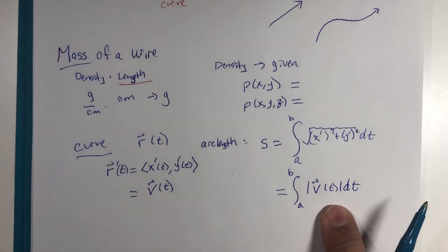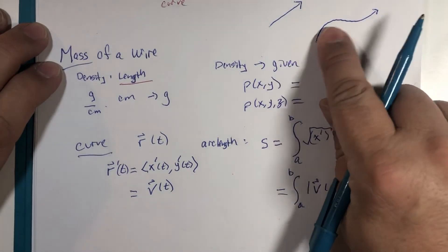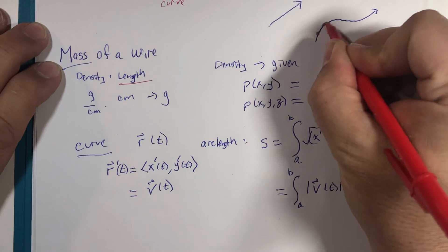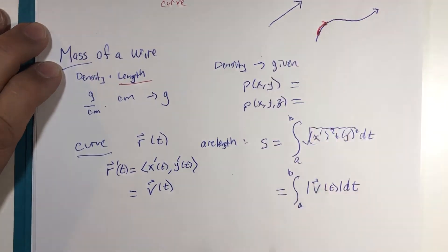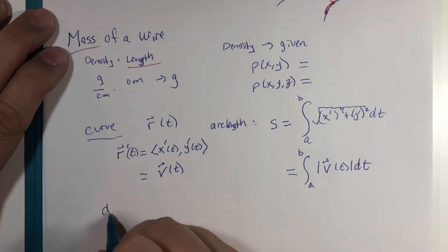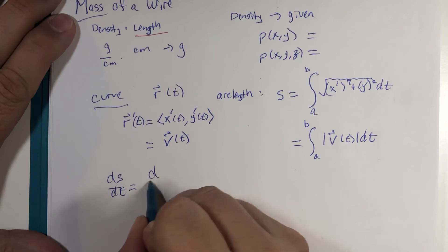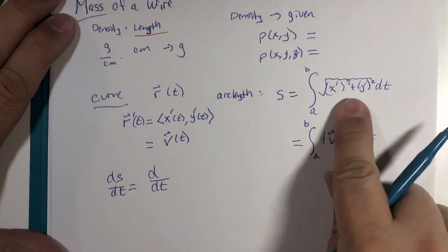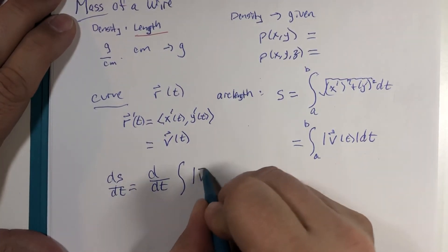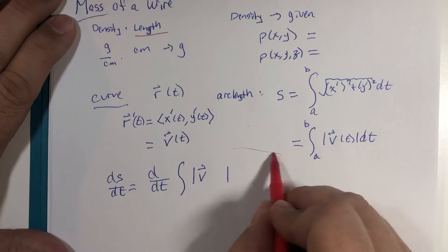So now what I want to do is to figure out how much a small section of length is on the curve. How far is it from here to here to here along this curve? How far is that? So if I were to take the derivative of that, we would get the derivative.